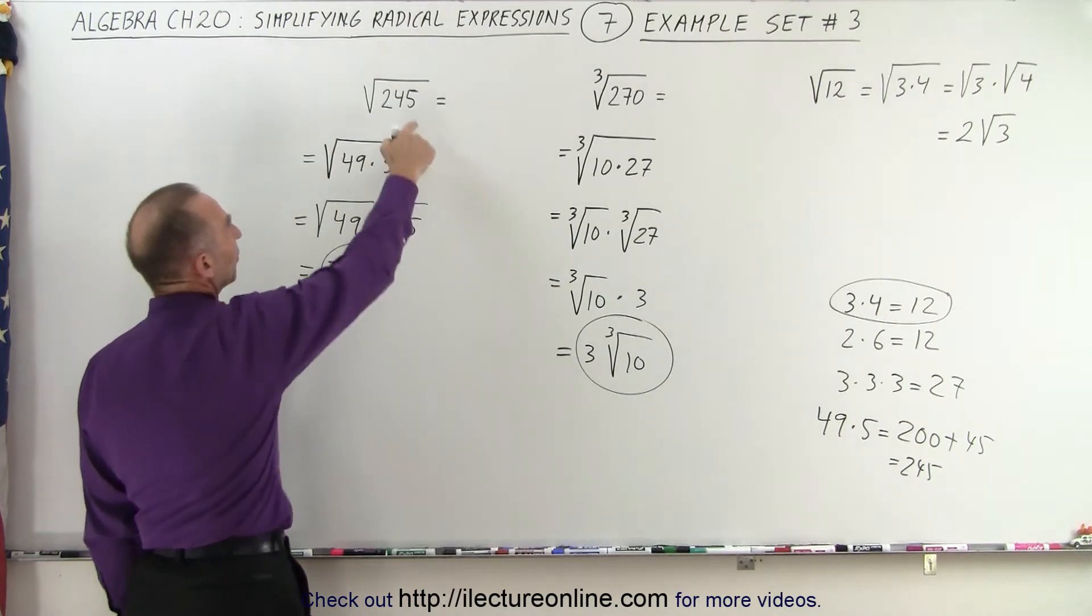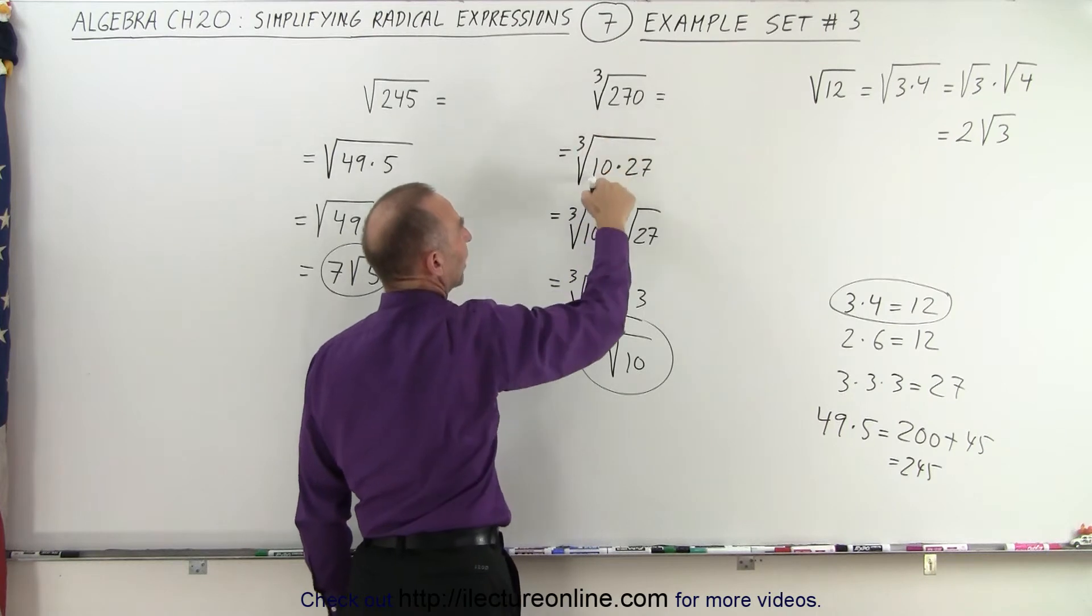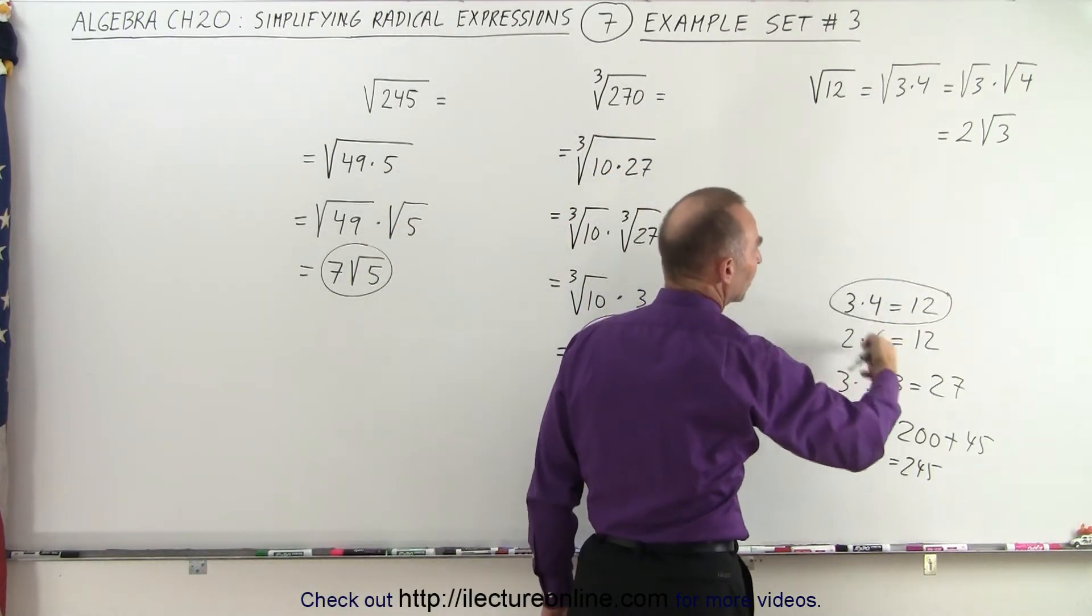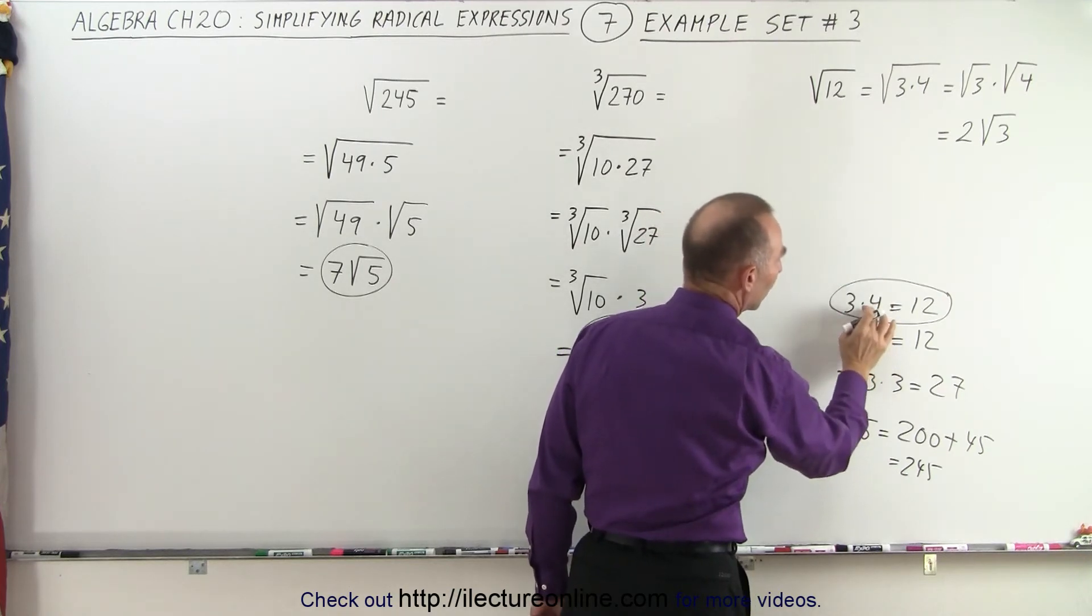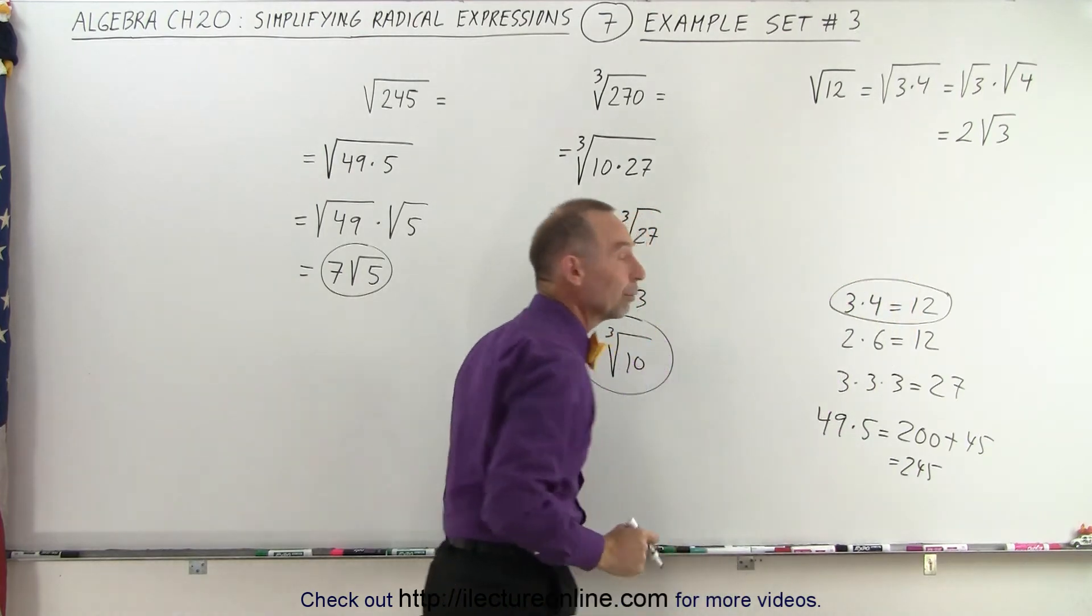So the key is, if it ends in a 5, try to factor out a 5. If it ends in a 10, try to factor out a 10. If it's a small number, look for the combinations that multiply to get that number, and then look for something where you have something like 2 squared or 3 squared or 4 squared, so you can take the square root of that.